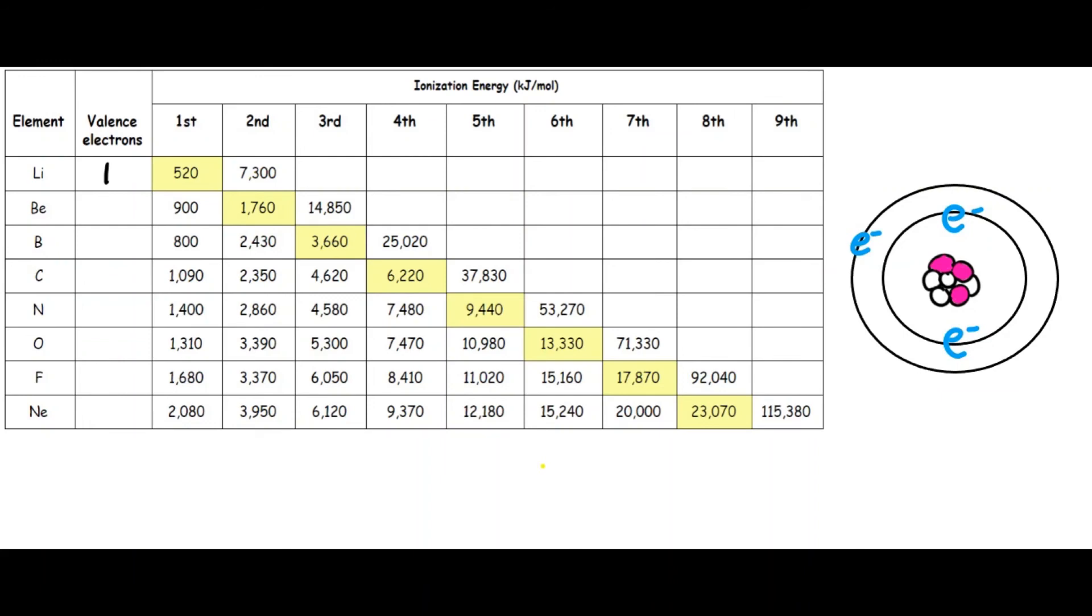In beryllium, there is a big jump between the second and third ionization energy, so there are two valence electrons, and so on.